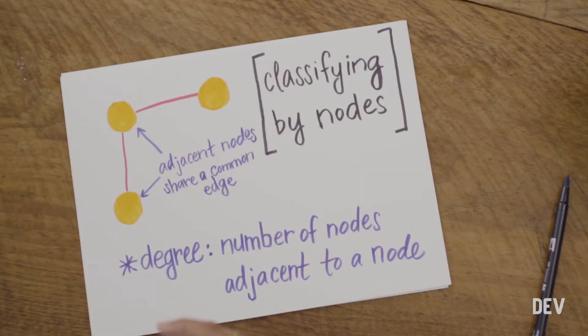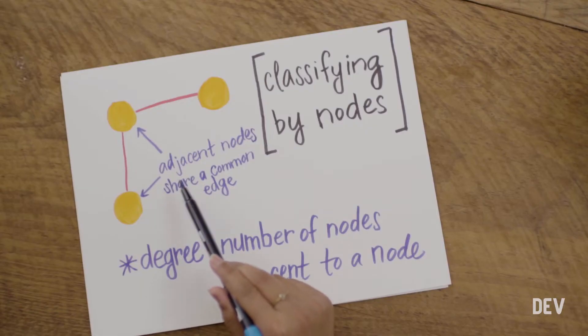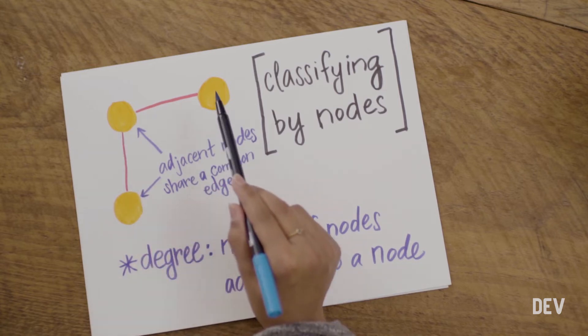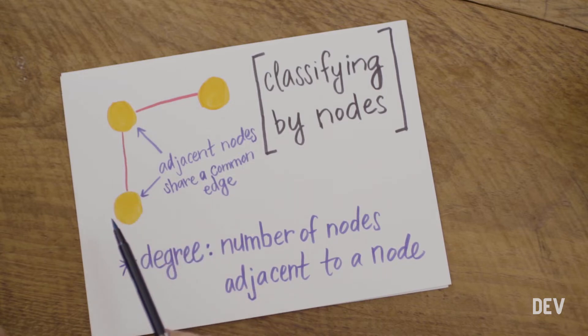We can also classify graphs by their nodes themselves, not just the edges. When we classify a graph by its nodes, what we're really doing is looking at the nodes and who their neighbors are. Every single node in a graph could be connected to another node, depending on if it has edges that are linking it or not. Adjacent nodes are nodes that share a common edge — in other words, they're neighbor nodes with an edge connecting them. The reason adjacent nodes become important is because we use the adjacency of a node to determine the degree of the node itself. When we say degree, what we mean is the number of neighbor nodes that the node has.